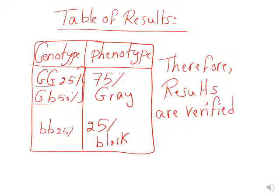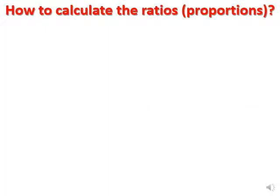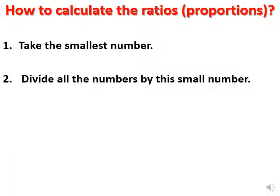We are done with Part 5. Now Part 6 uses the same exercise but asks us to calculate the proportion (ratio) rather than percentage. To calculate proportion: first take the smallest number (here it's 4); second, divide all numbers by that smallest number.